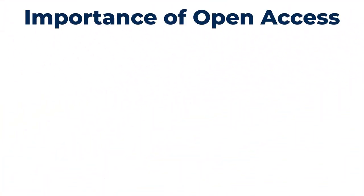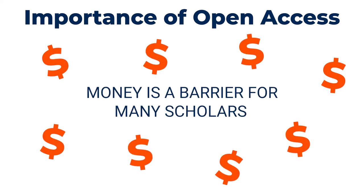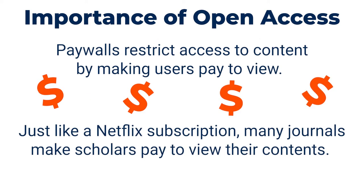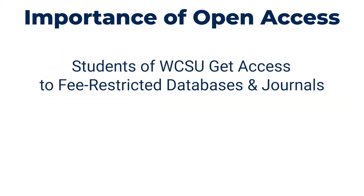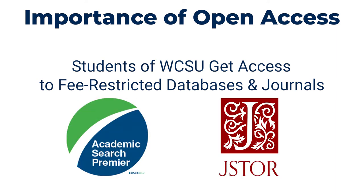Now, why are open access resources so important? The cost of access to academic publishing is commonly seen as one of its greatest barriers. If you've experienced hitting a paywall before, then you have some idea of how these pay-to-view journals restrict access. As a student of WCSU, you have access to fee-restricted journals, like ASP and JSTOR, because part of your tuition pays for these subscriptions.